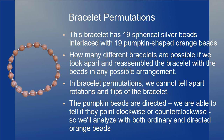We note that for bracelet permutations we cannot tell apart rotations and flips of the bracelet. One thing that makes this different than an ordinary bracelet permutation is that the pumpkin beads are directed, so we are able to tell if they point clockwise or counterclockwise. Since that's not part of usual bracelet permutations, we'll analyze the problem with and without directed orange beads.